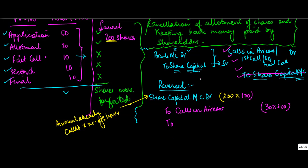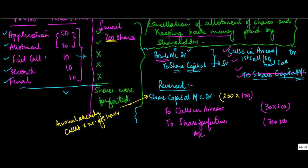The other account debited when money was received was the bank account — you received 70 rupees per share. But do you refund the money on forfeiture? The answer is no, there is no refund of money. The money is forfeited — it's kept back. This difference, the money which is retained, gets credited to the share forfeiture account. So the amount received is 70 into 200 = 14,000, credited to share forfeiture account. So your entries are completed.